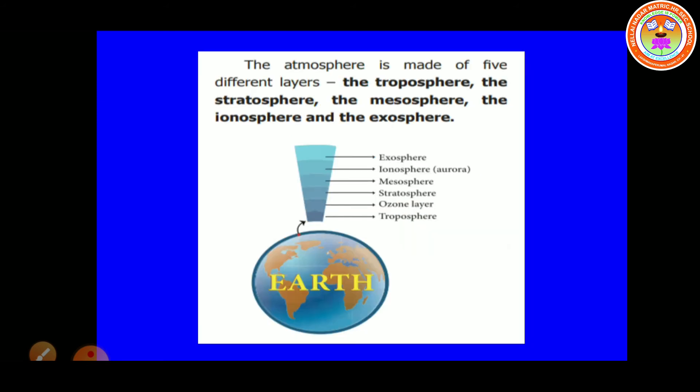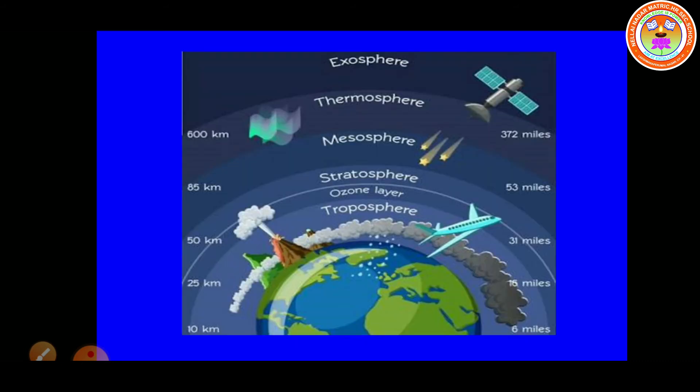And students, our atmosphere is made of five different layers: first, Troposphere; second, Stratosphere; third, Mesosphere; fourth, Ionosphere; and fifth, Exosphere. Which is the first layer of the atmosphere? Troposphere.